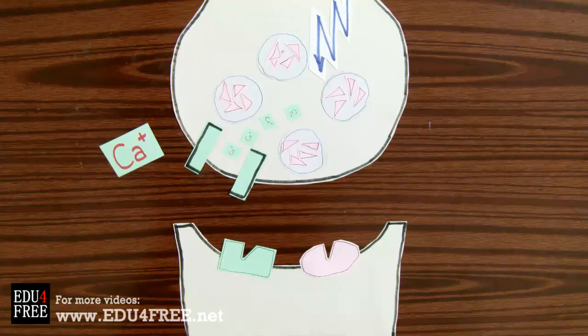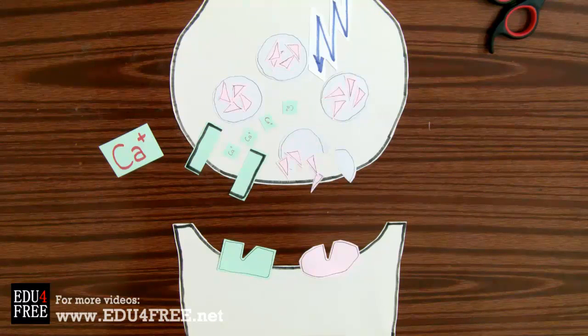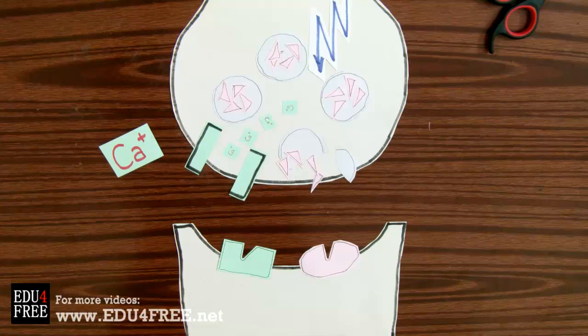The inflow of calcium inside the button leads to the rupture of the synaptic vesicles, and the chemical transmitters move outside and are released.